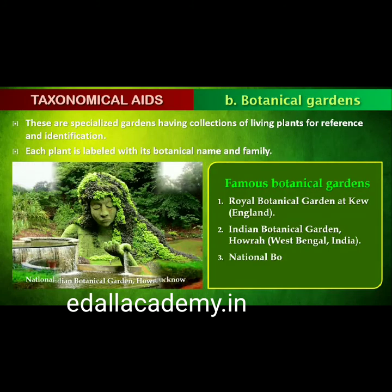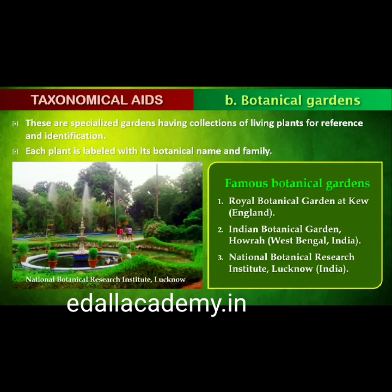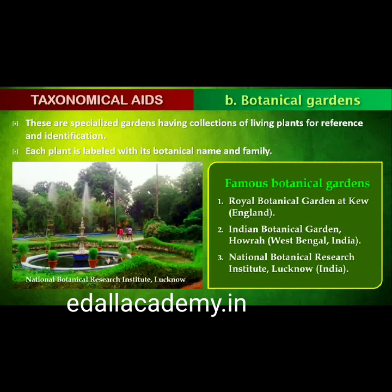Botanical gardens are specialized gardens with collections of living plants for reference. Plant species in these gardens are grown for identification purposes, and each plant is labelled indicating its botanical scientific name and its family. The famous botanical gardens are at Kew, England; the Indian Botanical Garden, Howrah, India; and the National Botanical Research Institute, Lucknow, India.